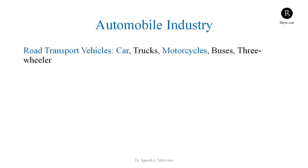The automobile industry manufactures, sells, and markets road transport vehicles like cars, trucks, motorcycles, buses, and three-wheelers. It depends upon the country which types of vehicle and which particular segment is prominent in their region. In the US and European countries, cars contribute the most to total vehicles. In countries like India, motorcycles or two-wheelers capture 75% of the total vehicle market. There is a dependency upon country and region, but the automobile industry comprises all these road transportation vehicles.